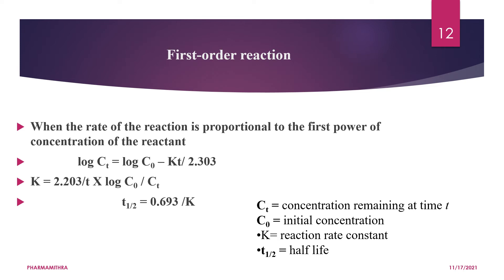For the first-order reaction A → product, the rate is: −dC/dt = k₁C. Integrating: dC/C = −k₁ dt. Converting to base-10 logarithm, we get: log Cₜ = log C₀ − (k₁t / 2.303). Rearranging gives the rate constant: k₁ = (2.303 / t) × log(C₀ / Cₜ), where C₀ is the initial concentration and Cₜ is the concentration at time t.